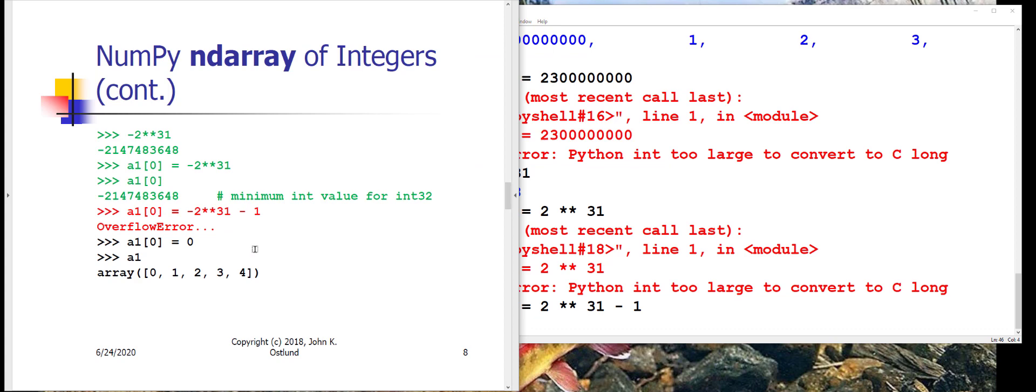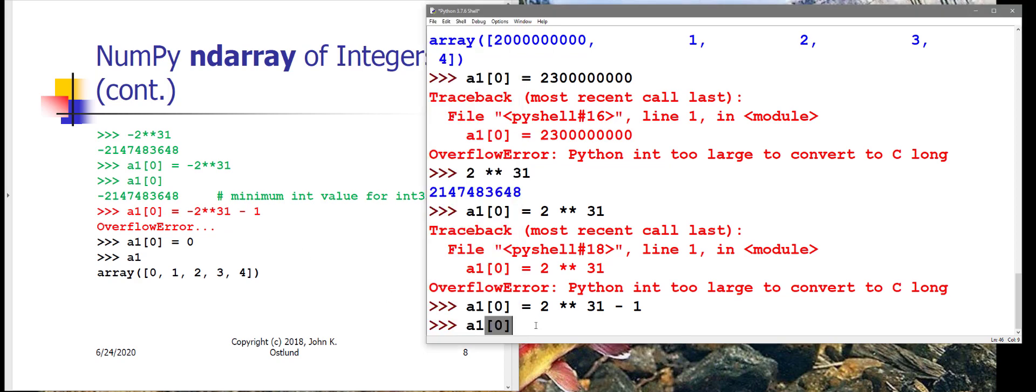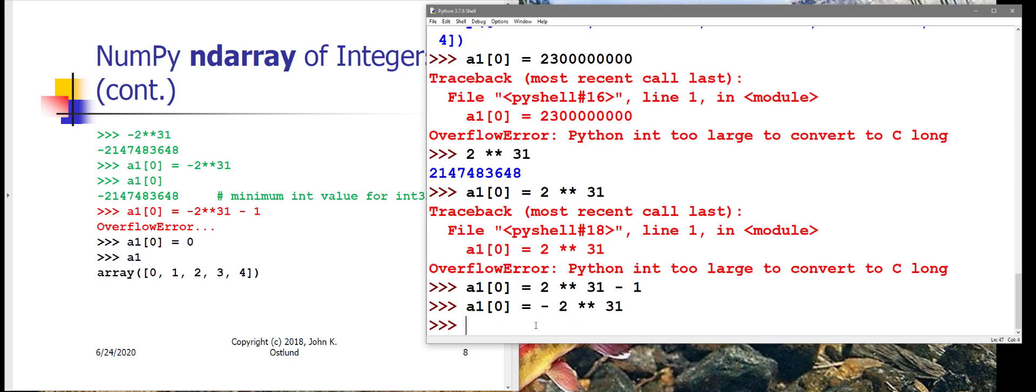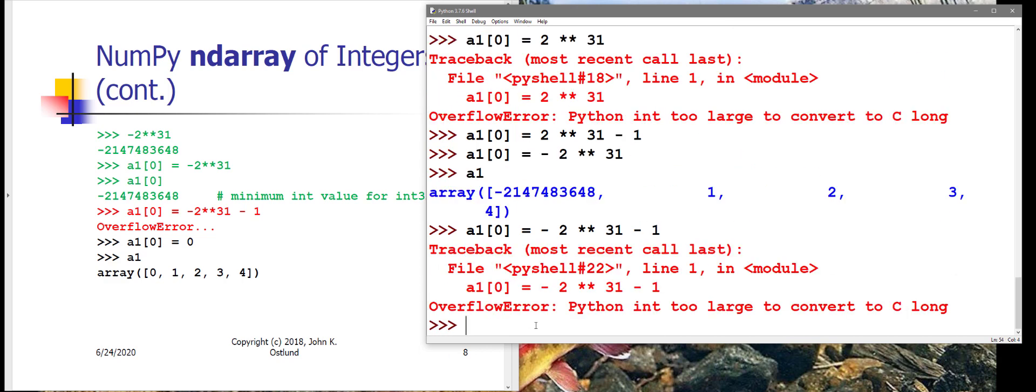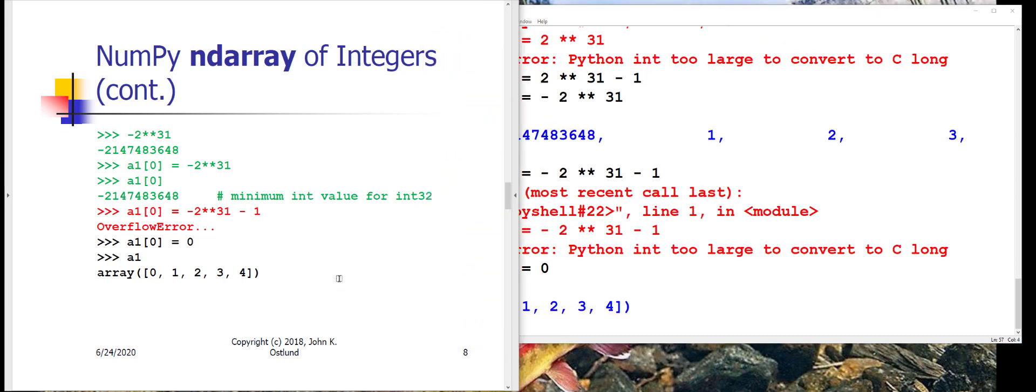In the negative direction, you can store the negative of 2 to the 31st power. That's the largest magnitude negative number that will fit. If I try to store into A1[0] the value minus 2 to the 31st power minus 1, just a little more negative than that, again I get yelled at. This is sometimes a nuisance that you can only fit values into an ndarray of int values that are between roughly plus or minus 2 billion. Let me reset A1[0] back to 0 so that A1 is in its original condition.